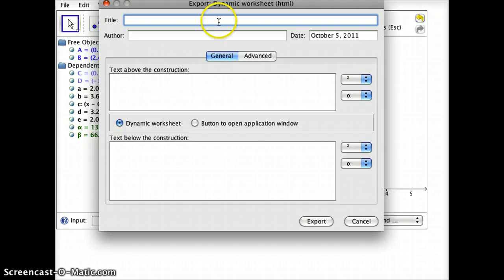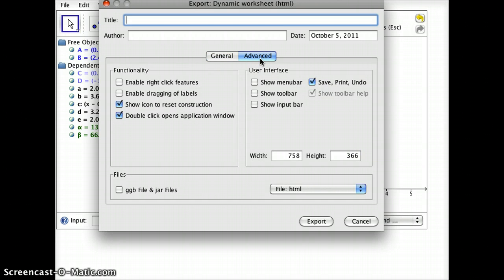What I can now do is if I click on Advanced, I can actually set this up to go directly to my Moodle. So I have a number of options. The title and author for what we're going to do doesn't matter. We're going to embed this directly into the Moodle page. Do we want students to be able to right click on it? Not in this case. Do we want students to be able to drag labels? Not in this case either. Do we want a menu bar, a toolbar, or an input bar? No, although in some situations you may choose to.